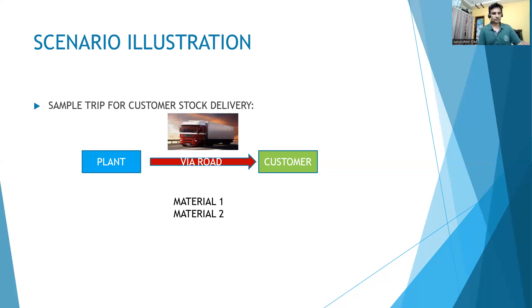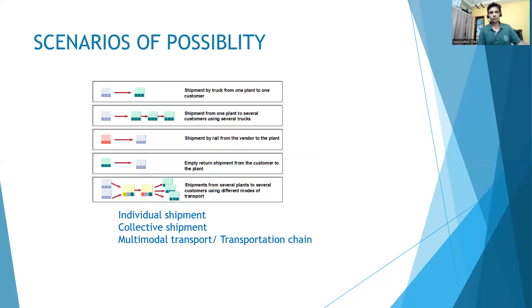Let's look at the scenarios we can create. This truck goes from one plant to one customer - the plant and customer location, which can be an individual customer or a physical location. Shipment from one plant to several customers - you can send to three different customers, the truck going to different addresses. Shipment by rail from vendor to plant - if you purchase stock through rail, you can receive the stock. The blue color indicates plant and green indicates customers.